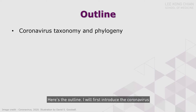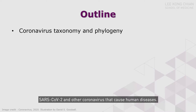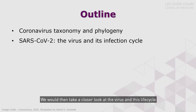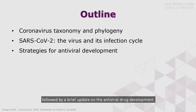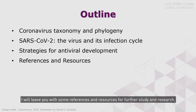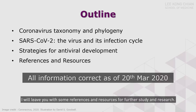Here is the outline. I will first introduce the coronavirus, with a particular emphasis on the phylogenetic relationship between SARS-CoV-2 and other coronaviruses that cause human diseases. We will then take a closer look at the virus and its life cycle, followed by a brief update on antiviral drug development. I will leave you with some references and resources for further study and research.